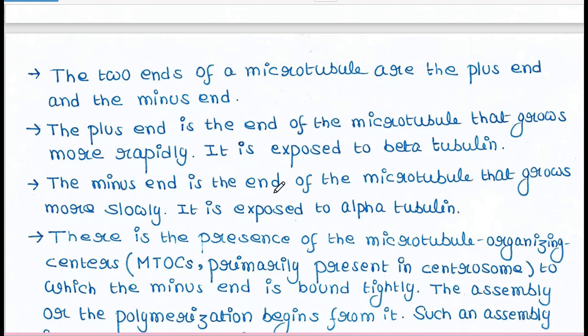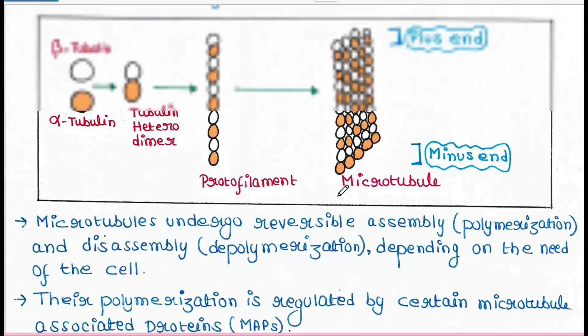The minus end is the end of the microtubule that grows more slowly. It is exposed to alpha tubulin. So this is the minus end. Here we will get only alpha tubulin, and this is the slow-growing end.